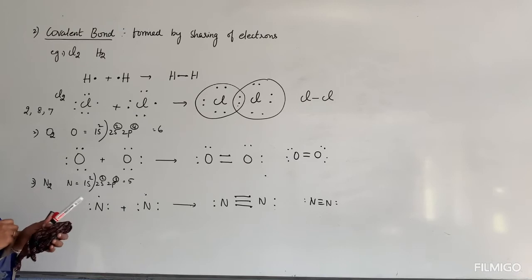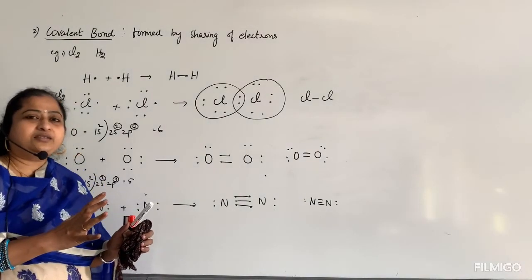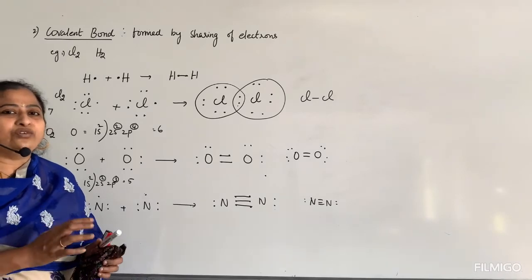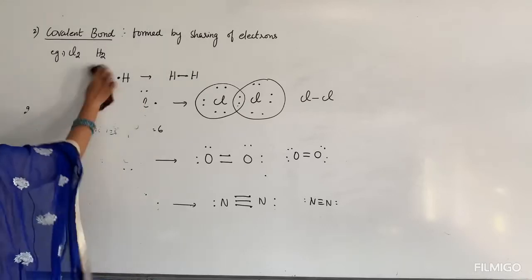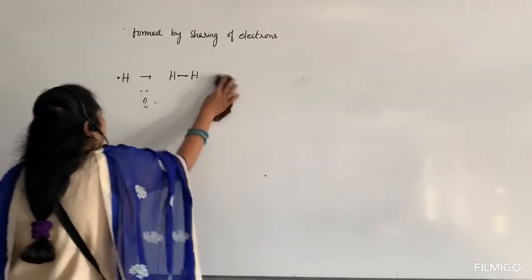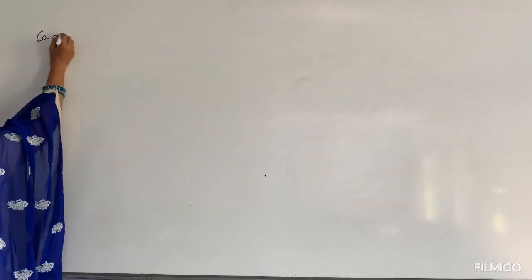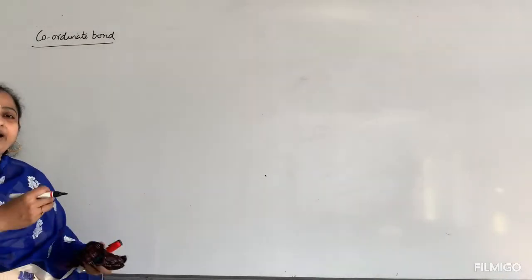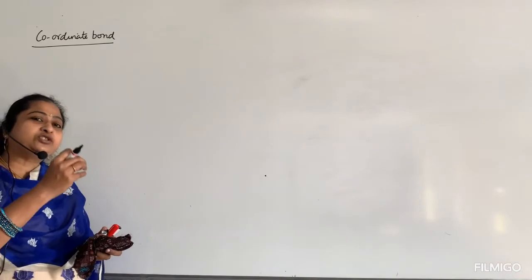So this is how a covalent bond is formed between atoms — by sharing of electrons. When two atoms share electrons between themselves to get 8 electrons (octet configuration), the bond formed is called a covalent bond. Now we go for the coordinate bond — one atom gives completely a lone pair of electrons to another atom. Lone pair of electrons means two electrons that are given completely to the other atom.